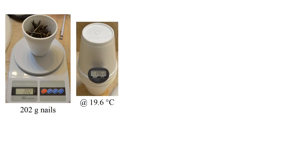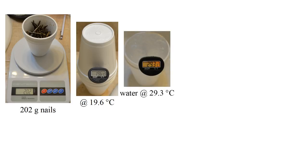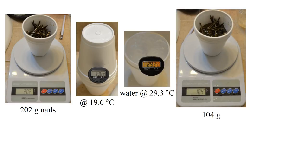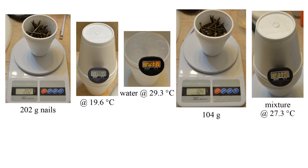The nails are at room temperature, which we measure as 19.6 degrees. We take some warm tap water, at 29.3 degrees, and pour 104 grams of it over our nails. Then we cover the mixture and let it come to thermal equilibrium. The final temperature is 27.3 degrees.